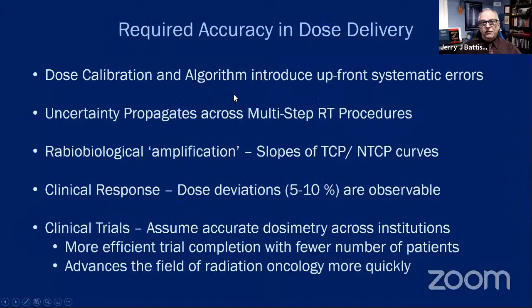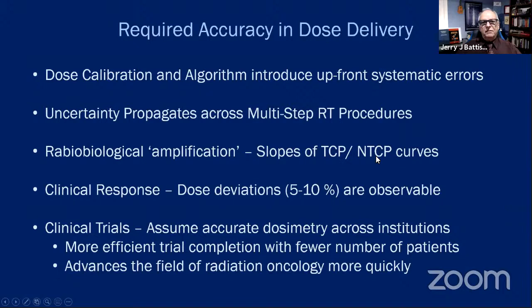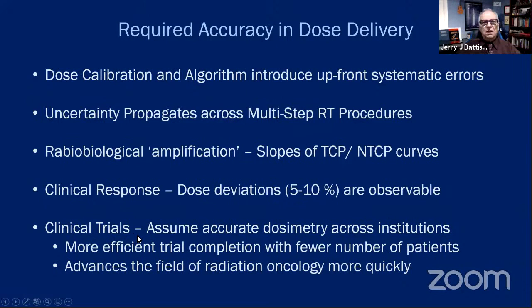What is the requirement for accuracy in dose delivery? A miscalibration of hardware or software introduces an upfront systematic error throughout the entire treatment. There are also random uncertainties, and there is the possibility of radiobiological amplification — if the slopes of the TCP and NTCP curves are steep, a small dose error of three percent does not mean clinical response changes by three percent. Clinical evidence shows that patients and radiation oncologists can detect changes of about five to ten percent.